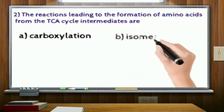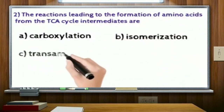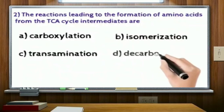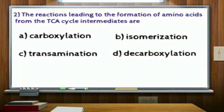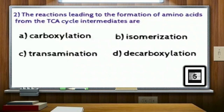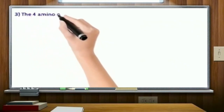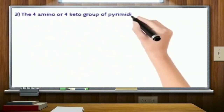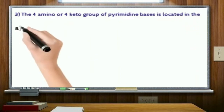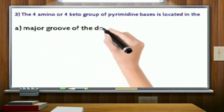The reactions leading to the formation of amino acids from the TCA cycle intermediates are: option A, carboxylation; option B, isomerization; option C, transamination; and option D, decarboxylation. Correct answer: option C.